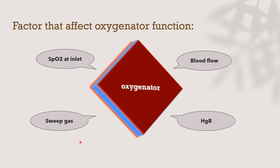The other elements affecting oxygenator function are components of rated flow: SpO2 at the inlet of the oxygenator, sweep gas FiO2, ECMO blood flow, and hemoglobin concentration. If we fix three of these and change one, we will see the effect on oxygenation and oxygen transfer in the next few slides.